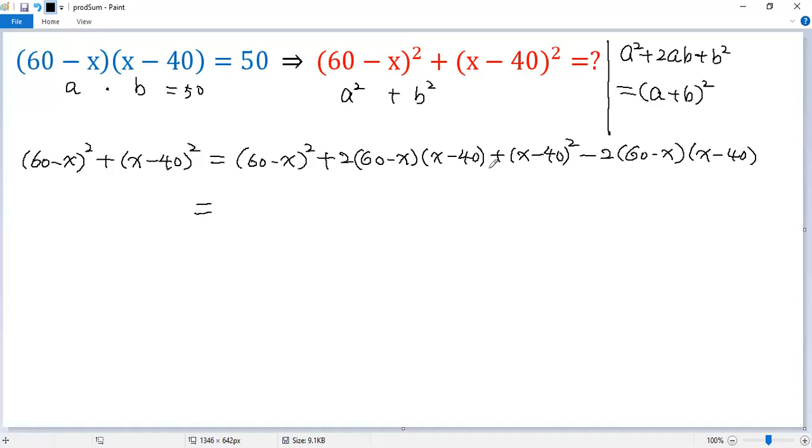The first terms combine to a perfect square: (60 minus x) plus (x minus 40), squared.